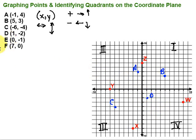Point E and F are the ones people get confused on most often. But if we remember, we go left or right first, and then up or down. For point E, the x-coordinate is 0, so I go 0 left or right — I stay right at the origin. Then negative 1 for up or down: the negative takes me down, putting me at point E. For point F, 7, 0: positive 7 takes me 1, 2, 3, 4, 5, 6, 7 to the right. And the y-coordinate is 0, so I go up or down 0 — I stay right on the x-axis. There is my point F.